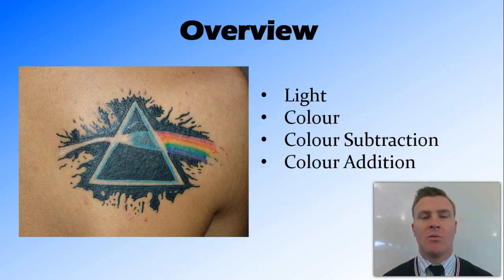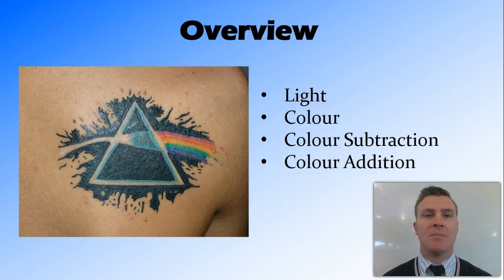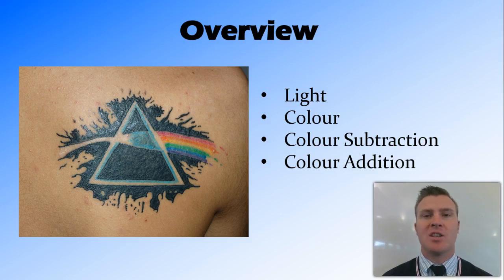In this video, we've looked at light and what light is. We've looked at how colour is light of a particular frequency or a set of particular frequencies. We've talked about colour subtraction, taking some of the frequencies of light away to change the colour, and colour addition, adding extra frequencies of light which again changes our perception of the colour.